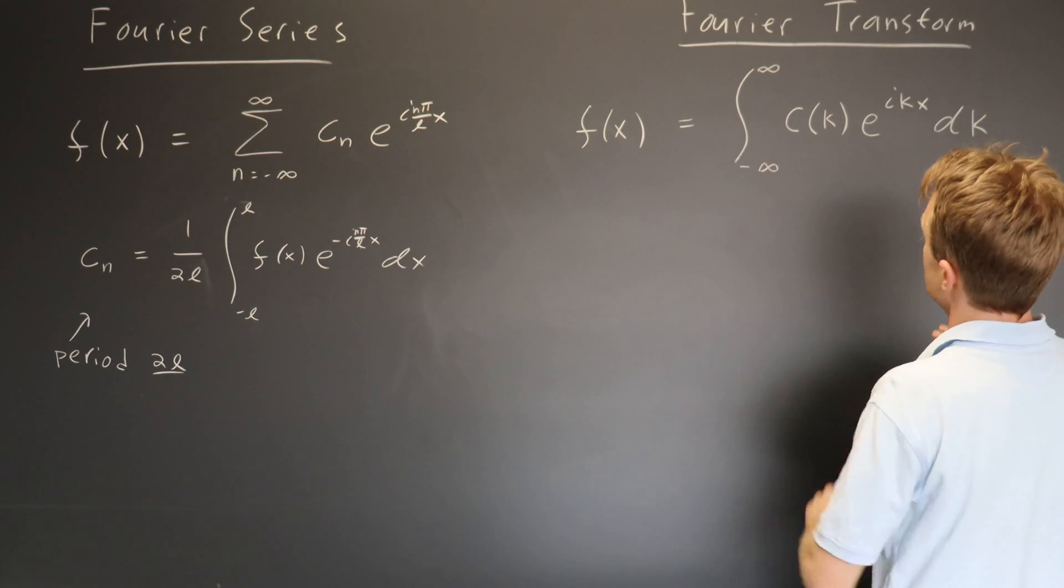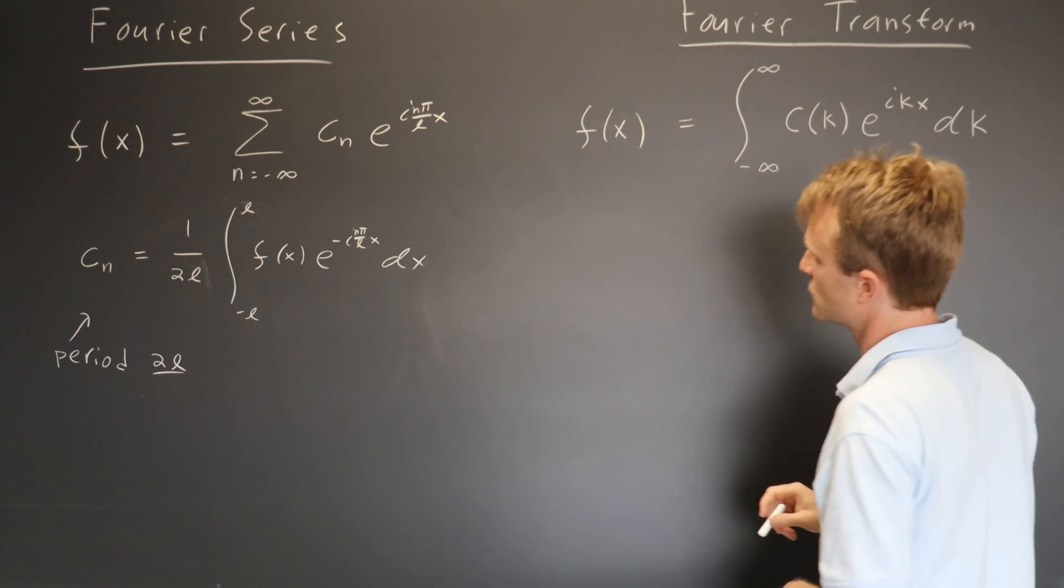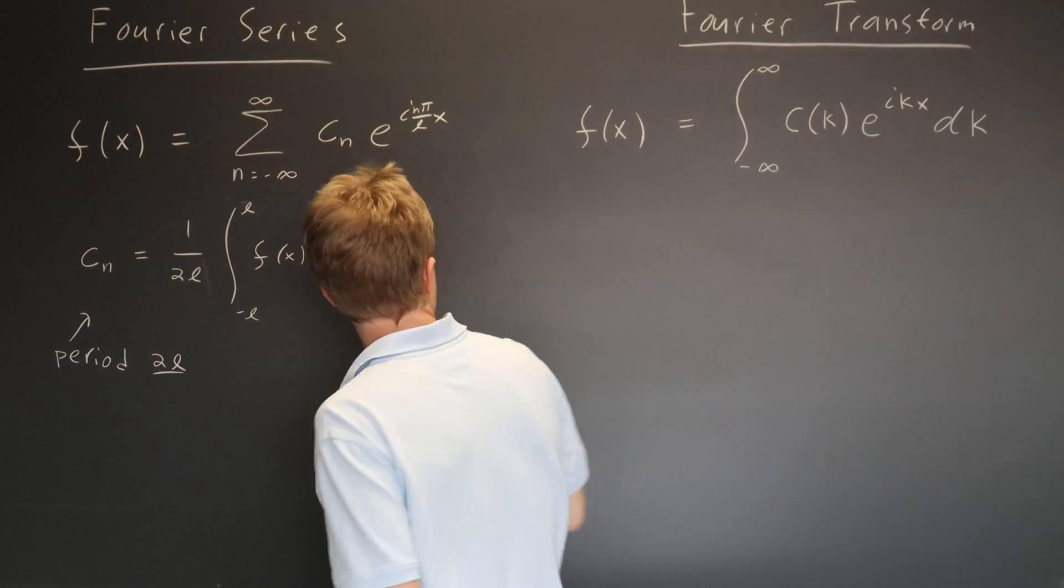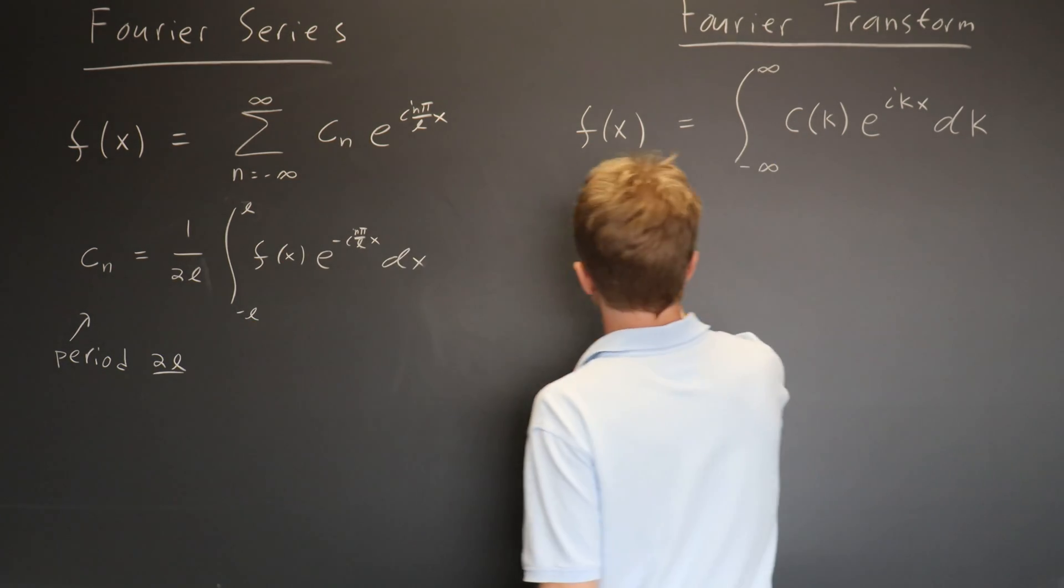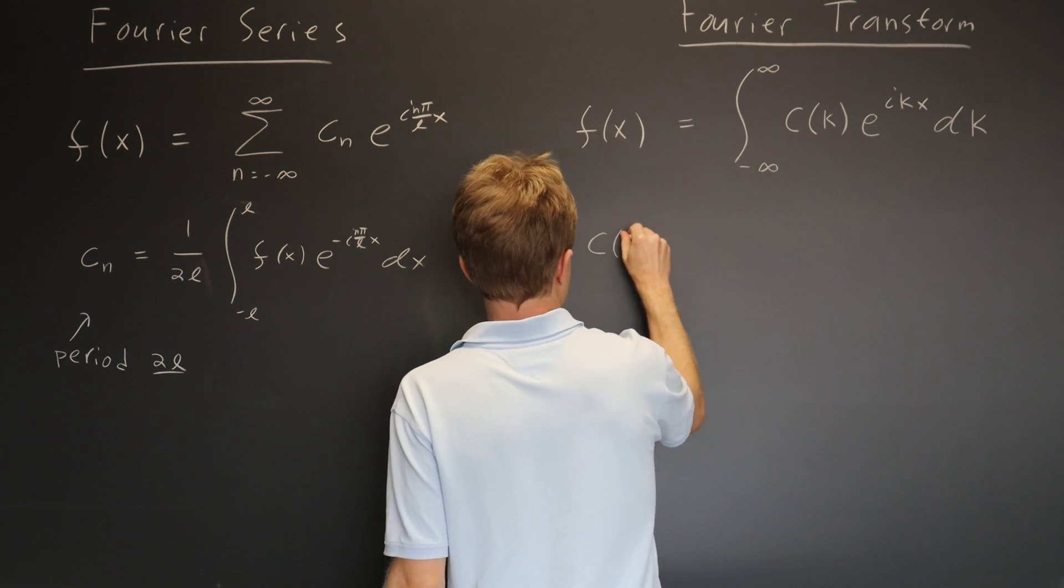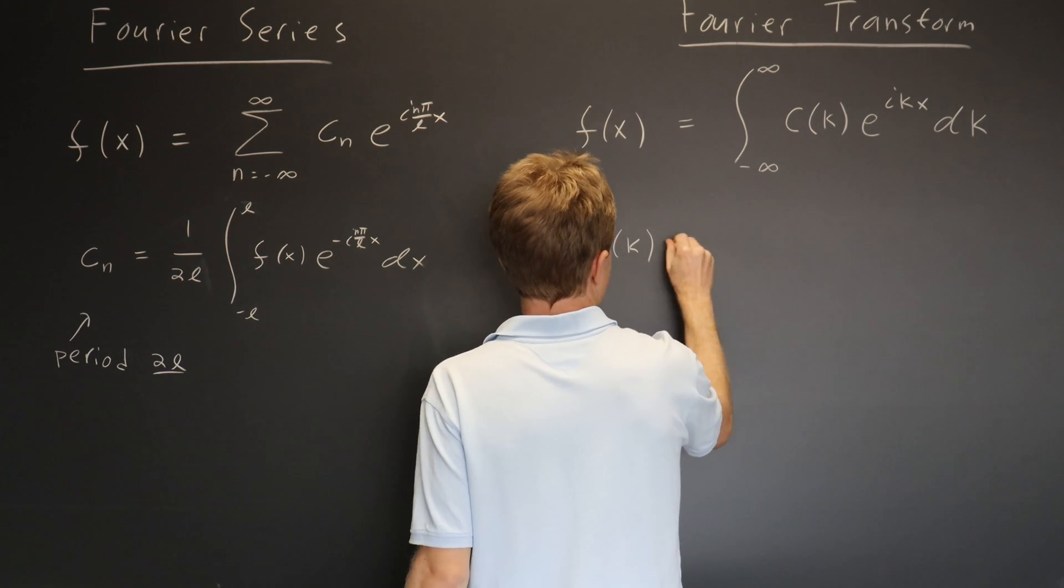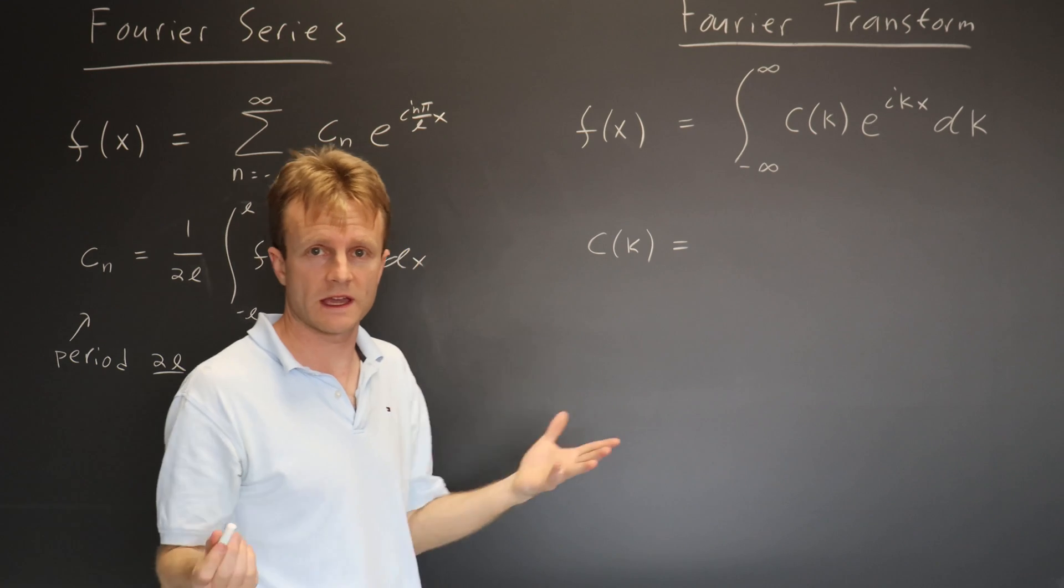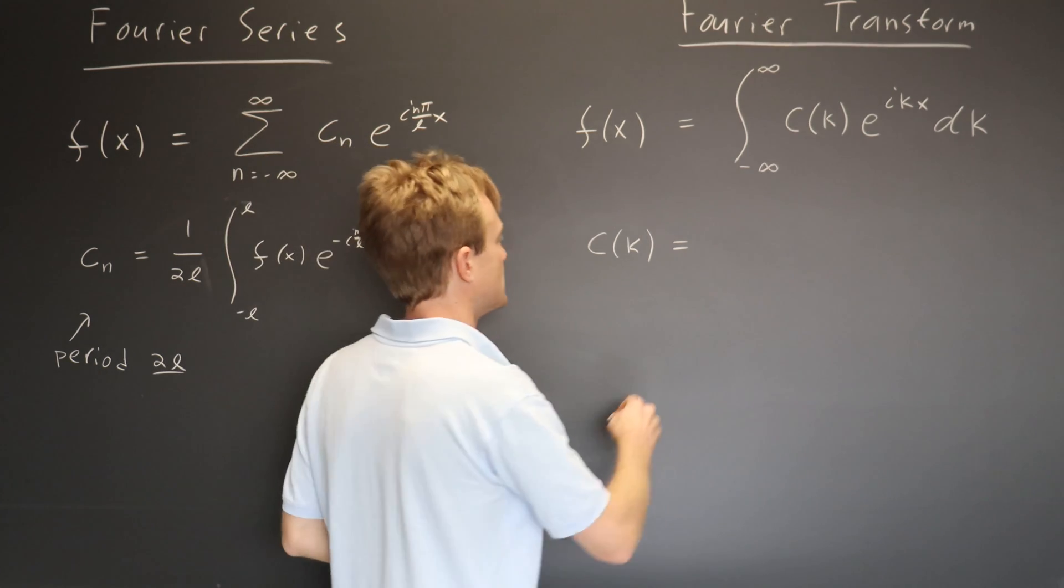So this now is the Fourier transform representation. And the formula for the coefficients gets changed in the same way. Now instead of a set of numbers, c sub n, we have a function, c of k, where k can be anything, not necessarily an integer.